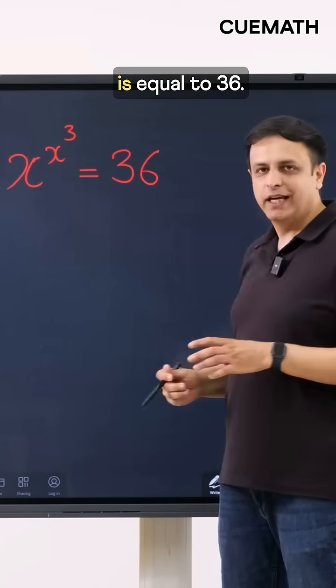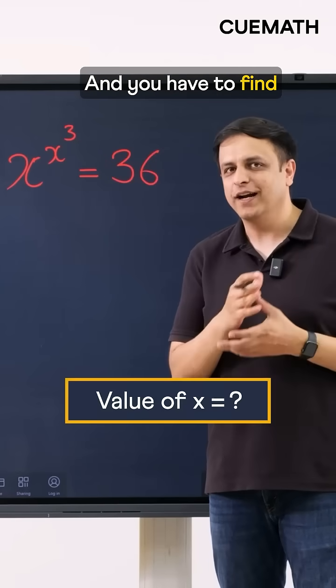x to the power x to the power 3 is equal to 36 and you have to find the value of x.